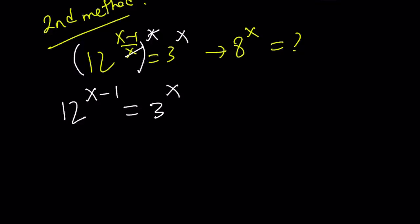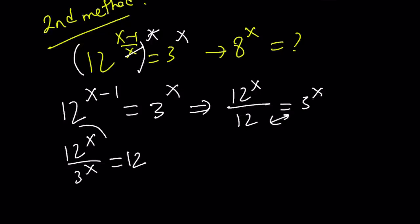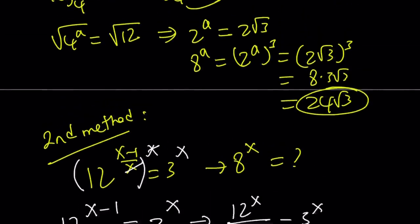Now what can I do with this? I have 12 to the x, 3 to the x. I can go ahead and do the following. Write this as 12 to the x divided by 12 equals 3 to the x. And since these two are multiplied, we can switch them out. 12 to the x divided by 3 to the x equals 12. And this is equivalent to 4 to the power x equals 12. And that brings us to the same point that we had before, but more directly.